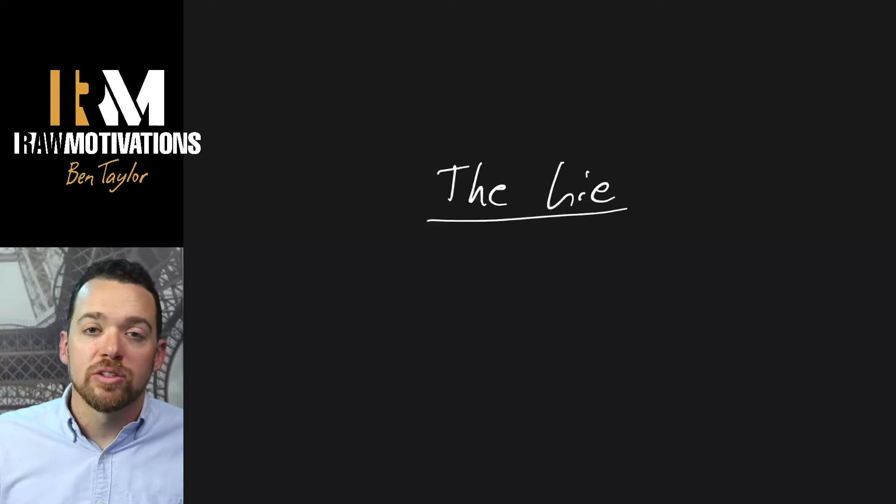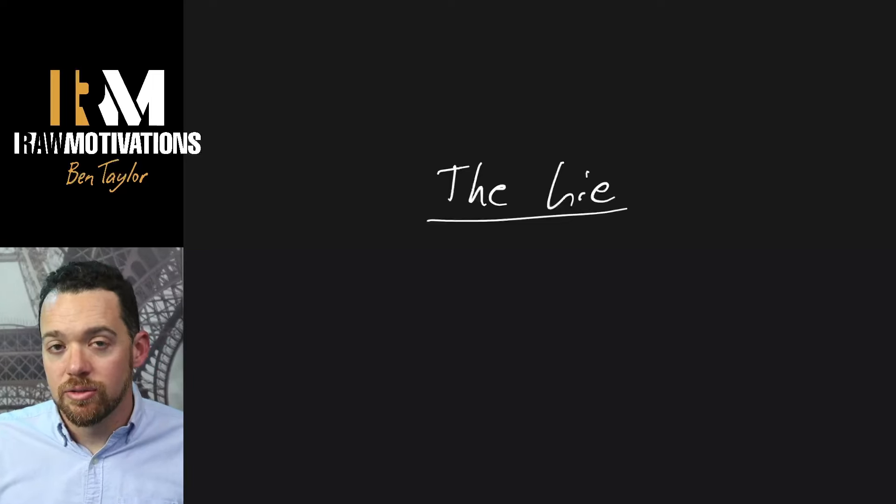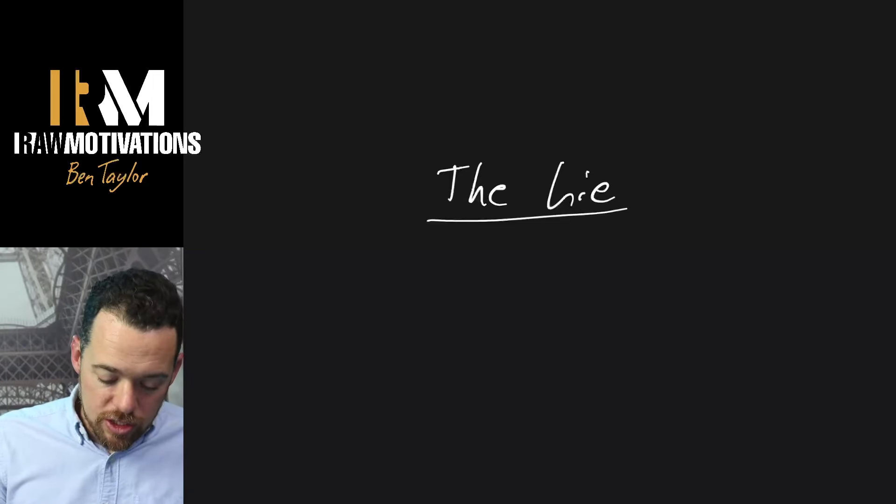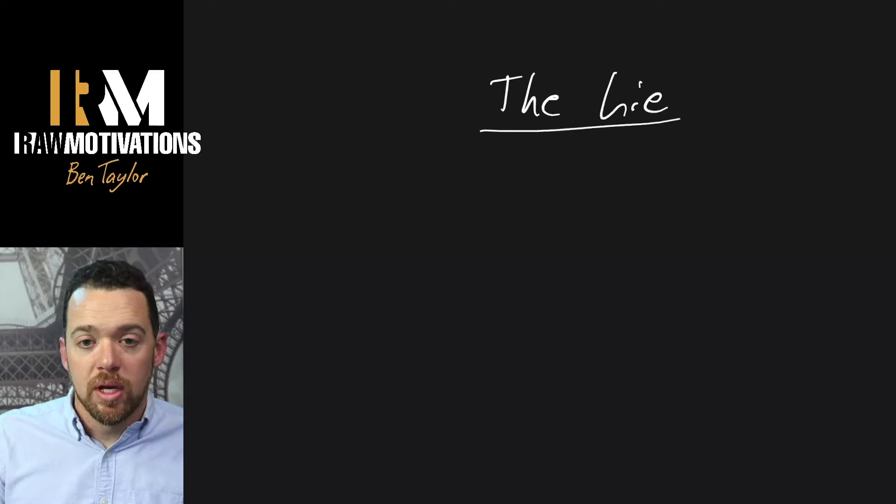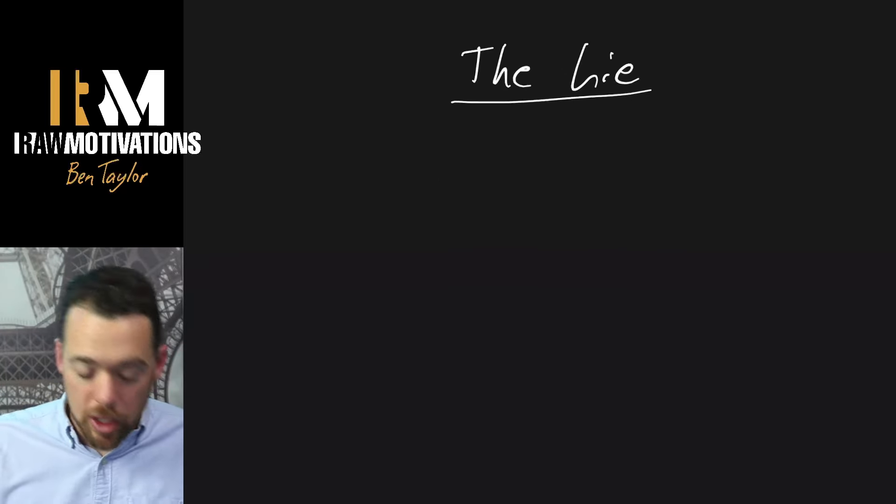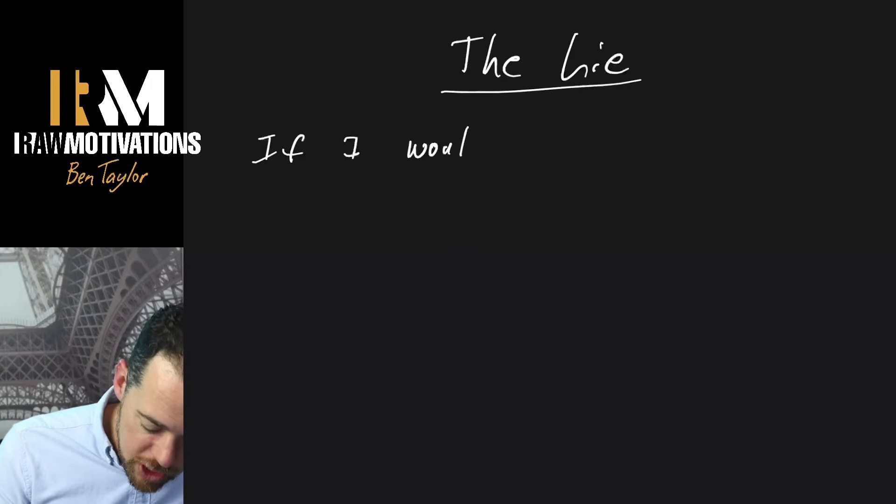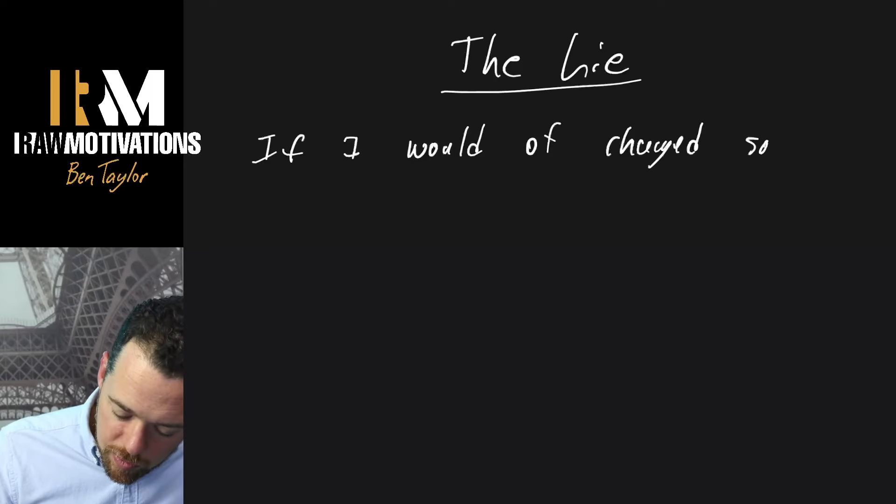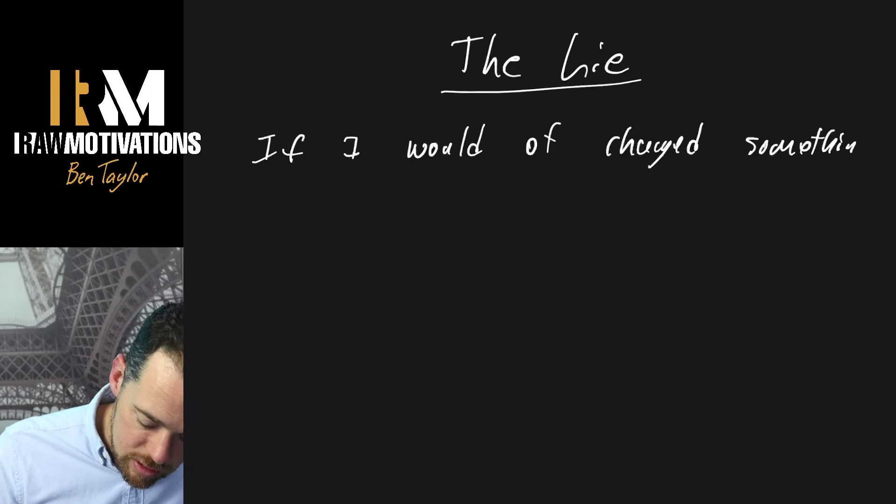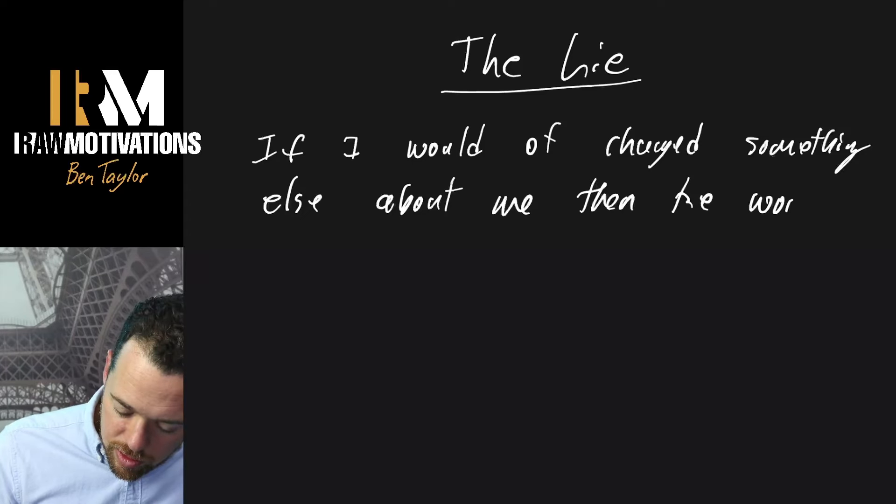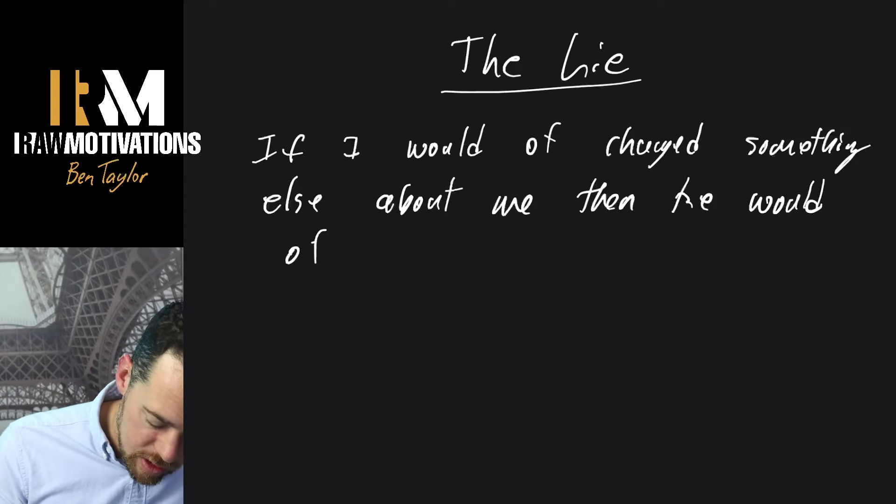Sometimes that lie, like I mentioned, goes back to your worth or goes back to your value. One of the big ones, even after the relationship, is you beating yourself up about what just happened. For instance, you might be like, one of the lies is if I would have changed something else about me, then he would have loved me.